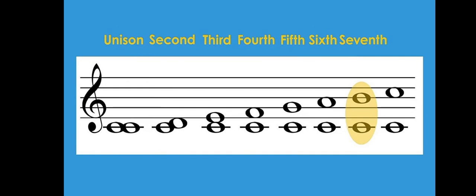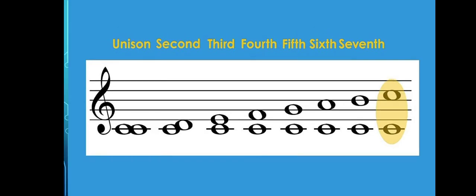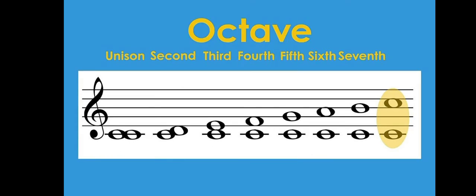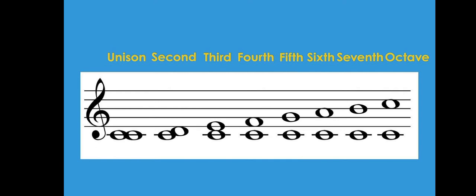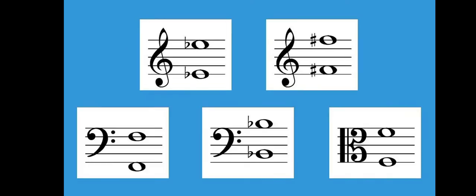Now looking at this last one — it is from C to C. The line there is C and the space above also is C. So from any note to the same note just above or below it, that interval is called an octave. It's special. You might be tempted to call it an eighth, but it's called an octave. This applies to E to E, F to F — all of these are octaves.